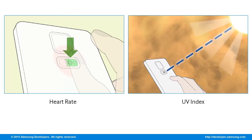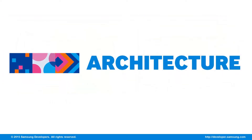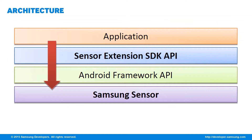Now let's have a look at the architecture that makes it work. The Sensor Extension architecture shows two important parts: the Sensor Extension SDK API, which exposes the classes needed to make objects that you'll manipulate, and also the physical Samsung sensor, which records the data you can process in your app.